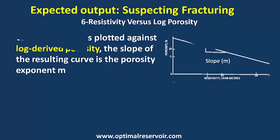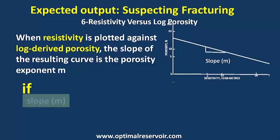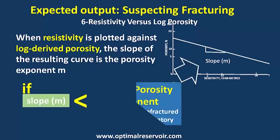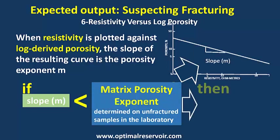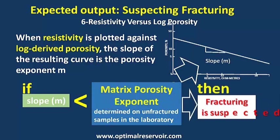Technique number six is resistivity versus log porosity. When resistivity is plotted against log-derived porosity, the slope of the resulting curve is the porosity exponent m. If slope m is smaller than the matrix porosity exponent, then fracturing is suspected.